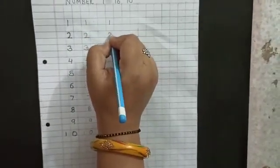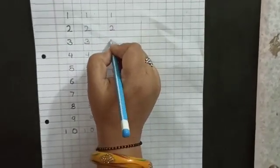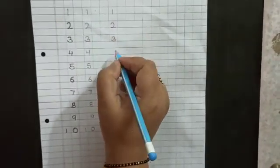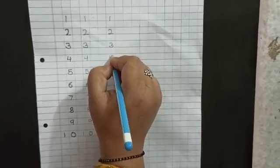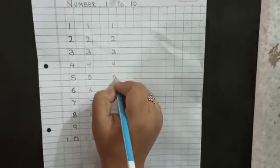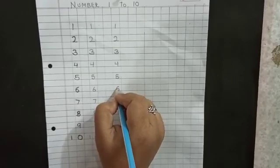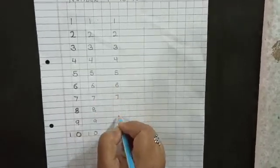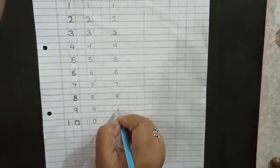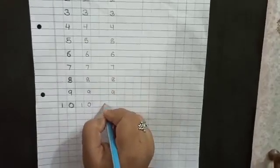1, 2, 3. Once again we have to write and touch the bottom line. 5, 6, 7, 8, 9, 10.